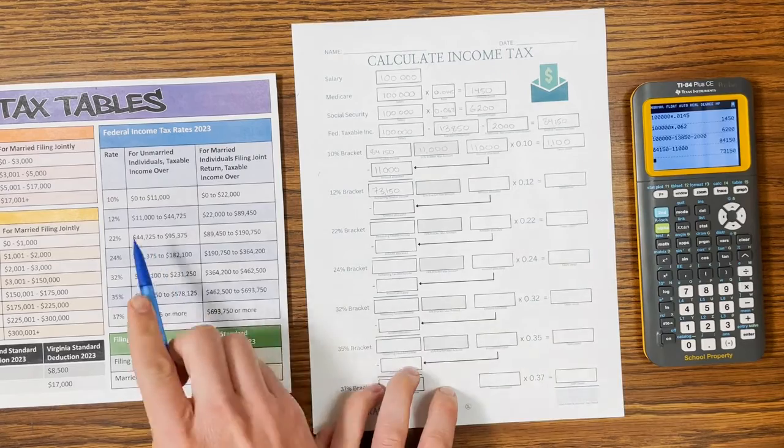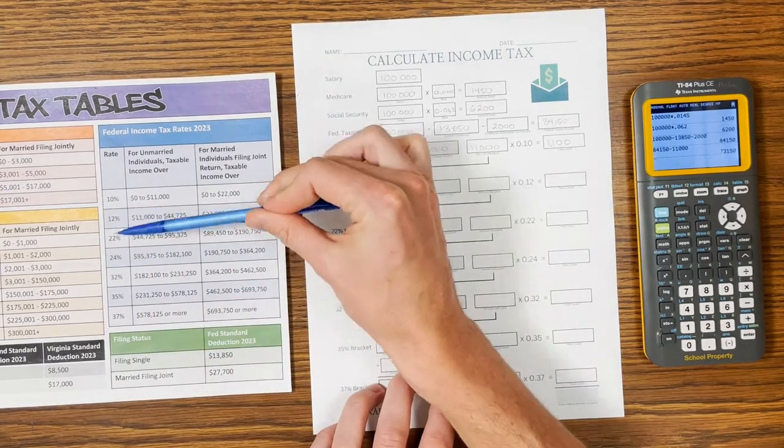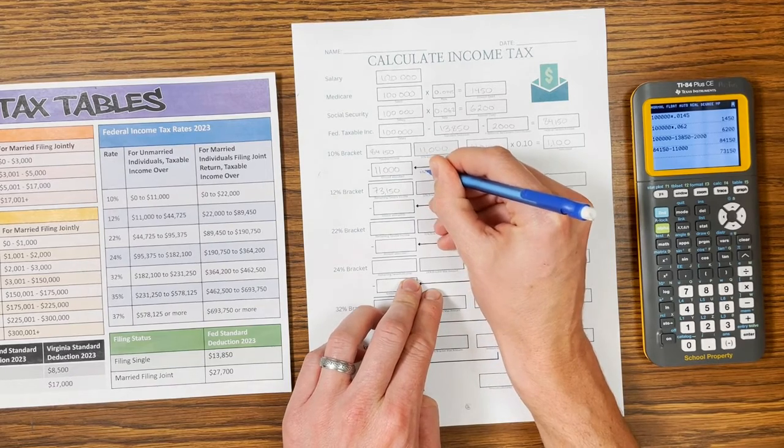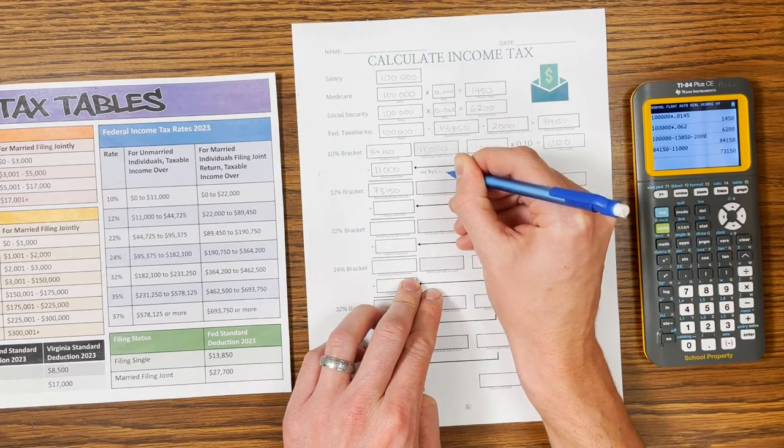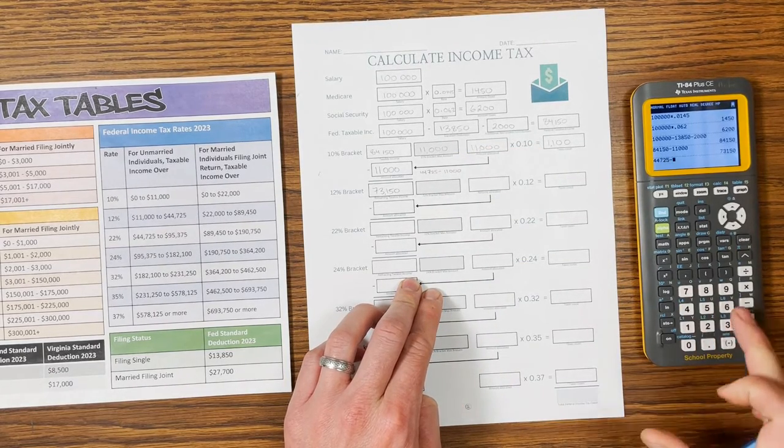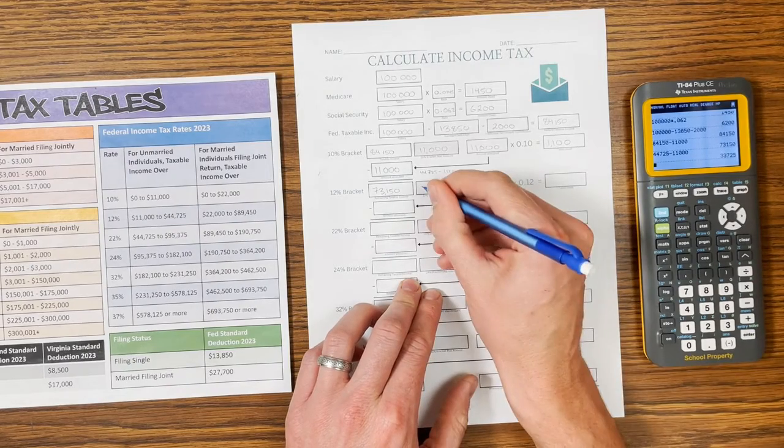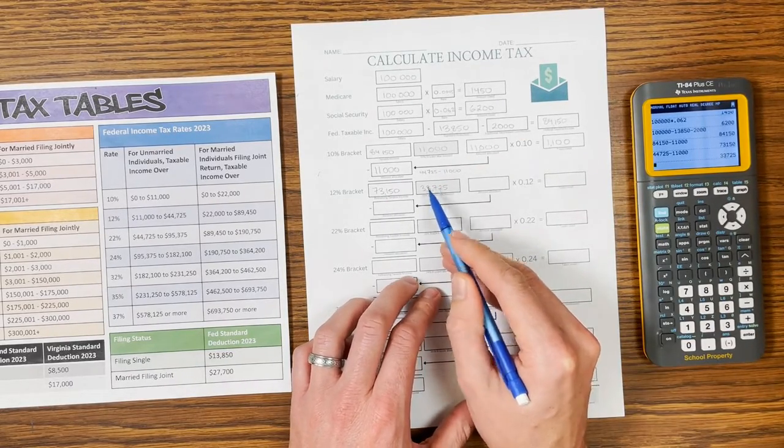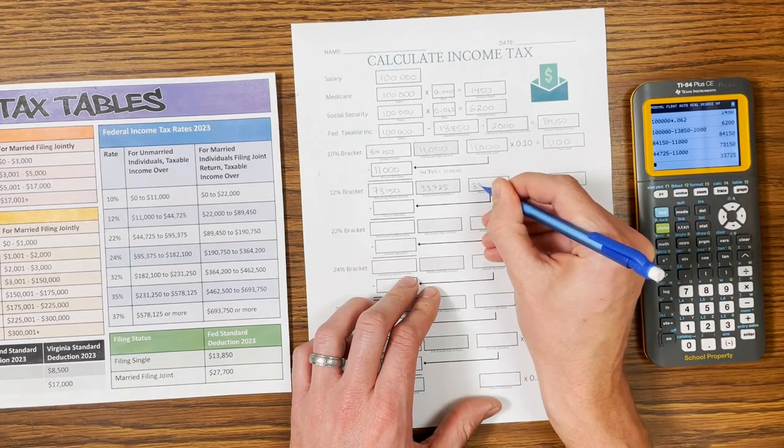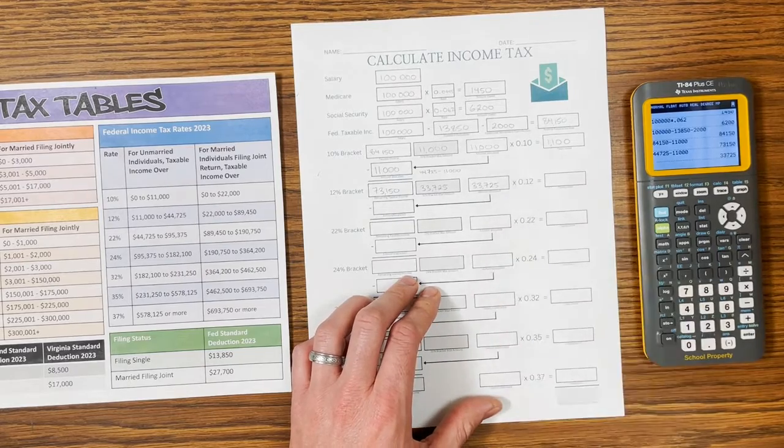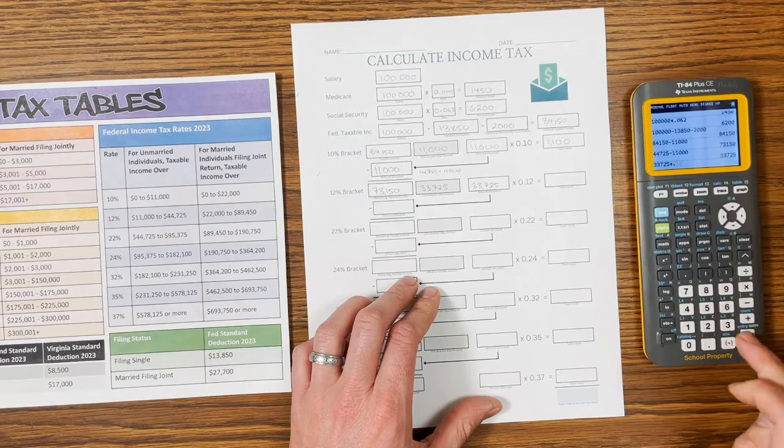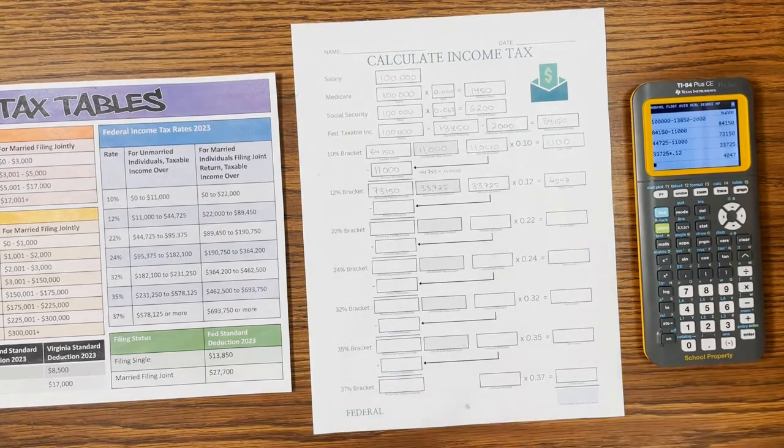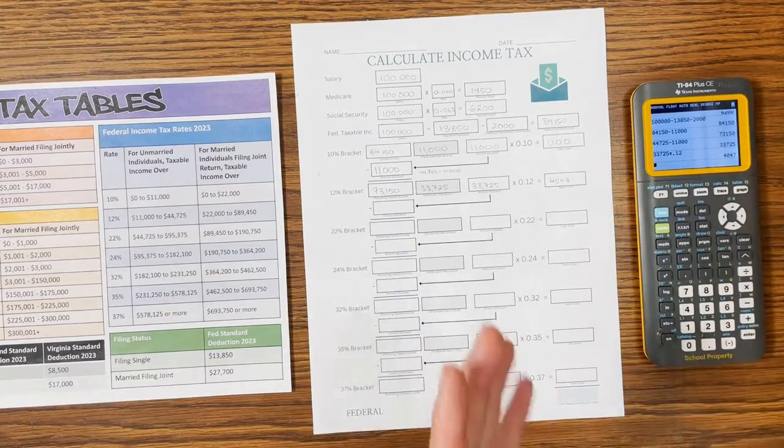So now the 12% bracket holds from $11,000 to $44,725. That's our next bracket. So the way we figure out the size of this one is we subtract the two of them. So $44,725 minus $11,000, this one can hold $33,725. Our remaining taxable income is still greater than this, so we're going to fill this one up again. And this gets taxed at 12%. So $33,725 times 0.12 is $4,047.